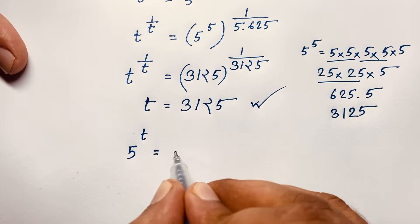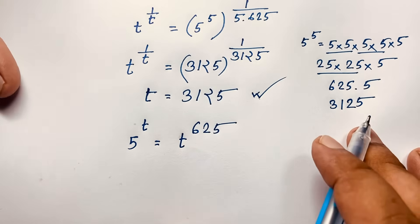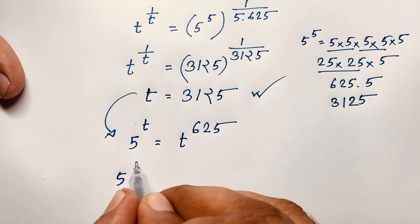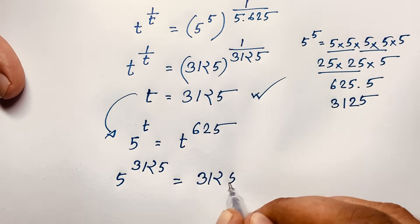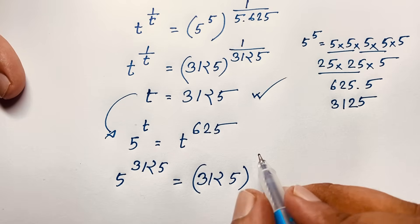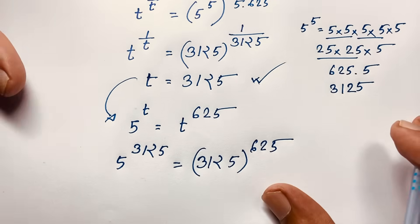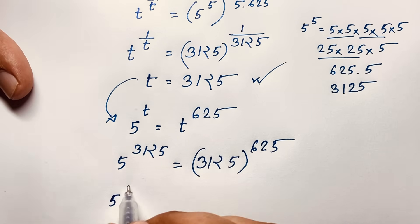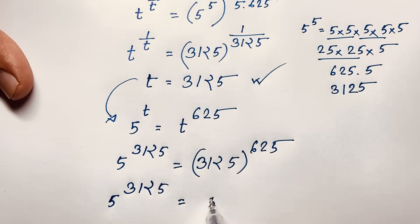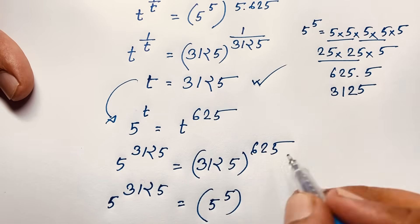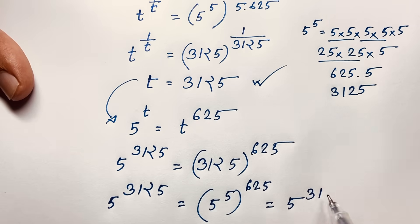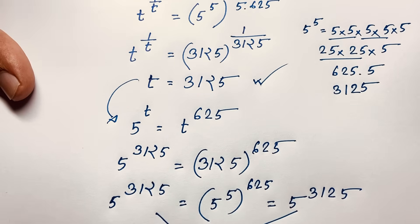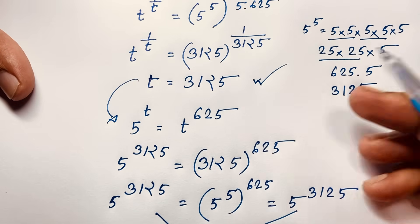Let's verify our answer. Our question is: 5 to the power t equals t to the power 625. Substituting t = 3125: left side is 5 to the power 3125. Right side is 3125 to the power 625. Since 3125 = 5^5, the right side becomes 5 to the power 5 × 625 = 5 to the power 3125. Left hand side equals right hand side, confirming t = 3125.